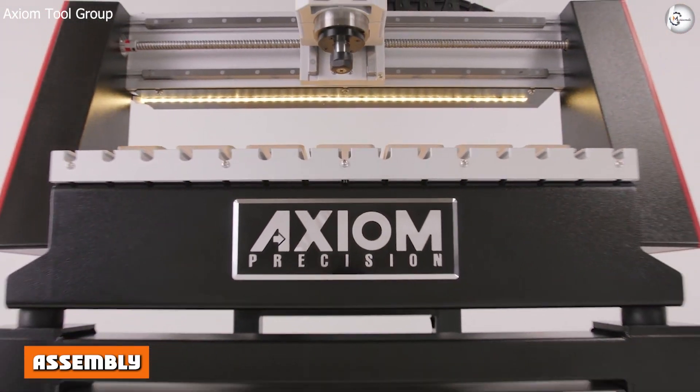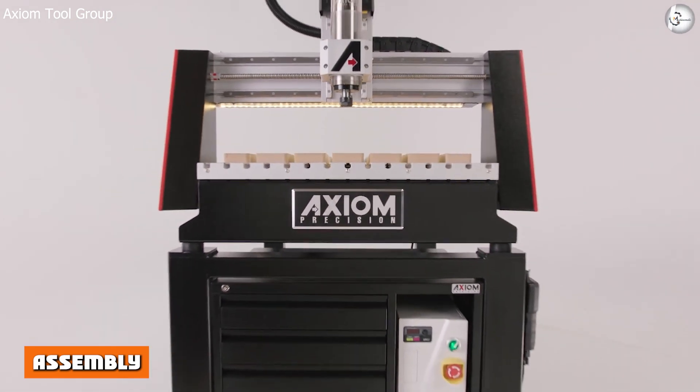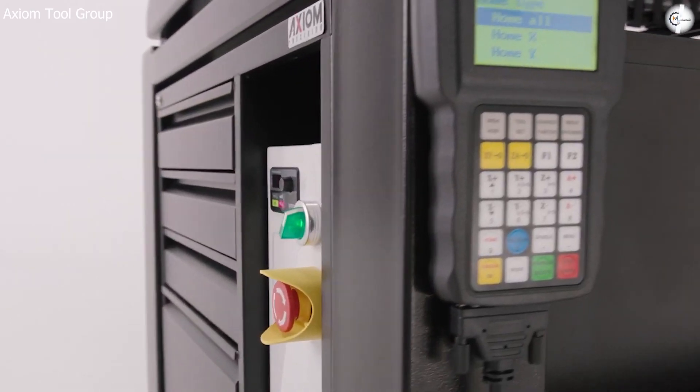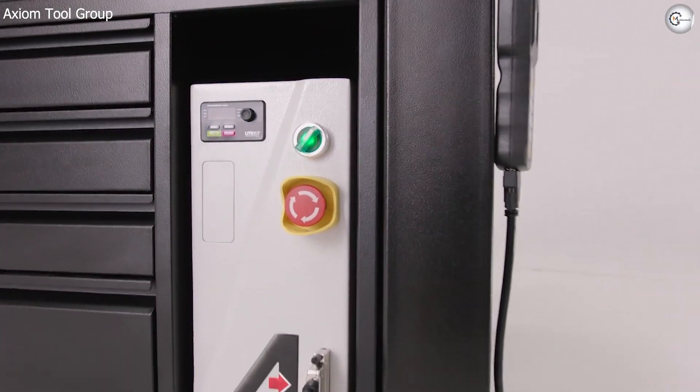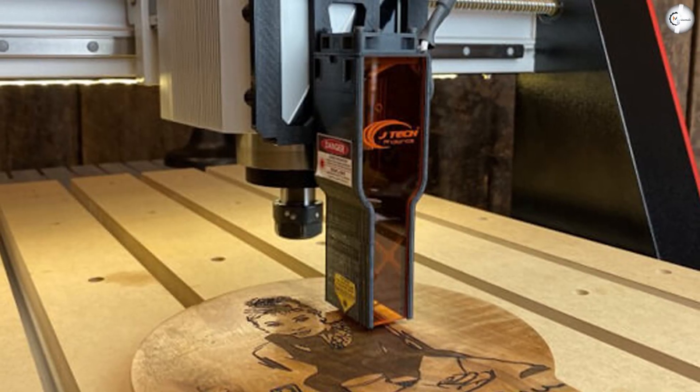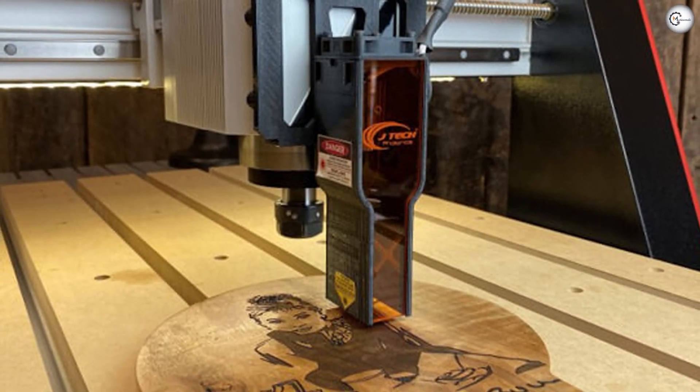Assembly. The CNC kit arrives as parts and you need to assemble them. Axiom provides a well-detailed assembly manual and there are several videos on YouTube that will guide you through the assembly process. You can assemble the CNC in around 5 hours. However, if you order the metallic stand for the machine, expect the assembly time to go up.